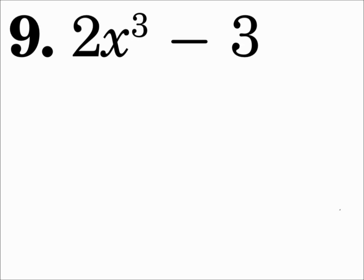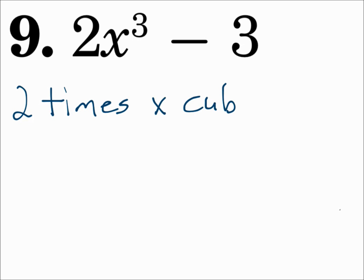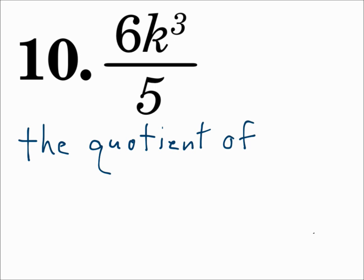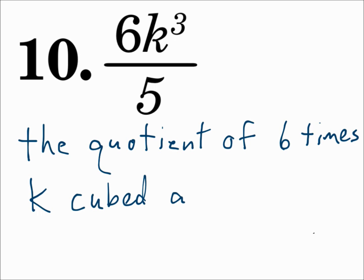Number nine: two x cubed minus three. I can say it almost like that: 'two times x cubed minus three.' Number ten: six k cubed divided by five. Here I'm dividing, so I can say the quotient of — what am I dividing? Six times k cubed and five.